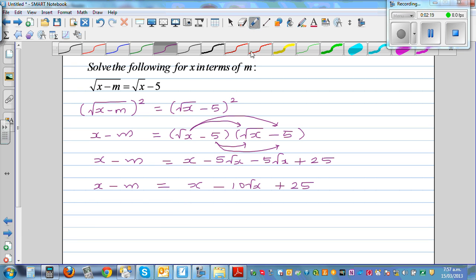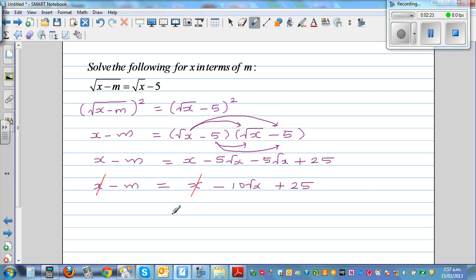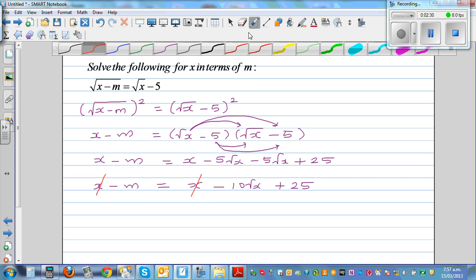So what can we cancel from both sides? You got x on left-hand side and x on right-hand side. So taking away x from both sides, x gets cancelled.